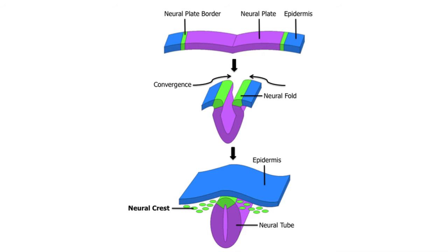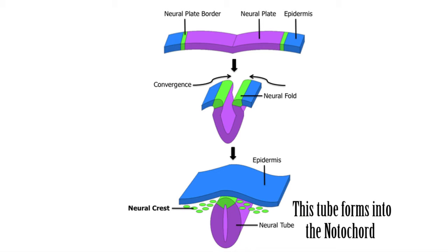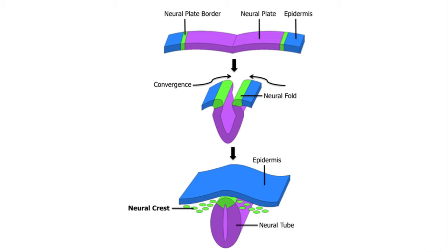Neural crest cells form out of a fold along the ectodermal layer of cells, which fold inward to form a neural spinal cord, as well as the notochord and backbone. On the edge of this fold of cells is a group of cells which detach from the ectodermal layer and migrate throughout the developing embryo. These are the neural crest cells, given the term since they originate from the crest of this neural tube.